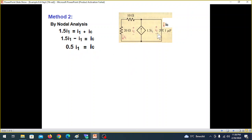And from here manipulating we get 0.5 I1 is equal to IC. Now this is VC and as we have discussed in the previous slide,